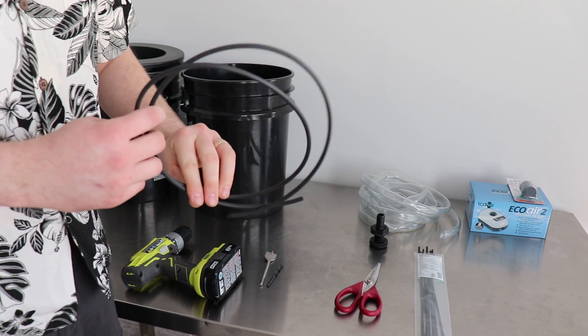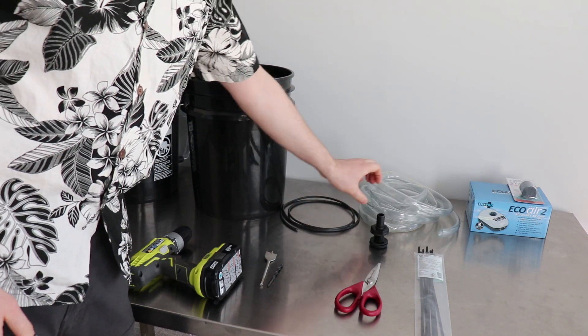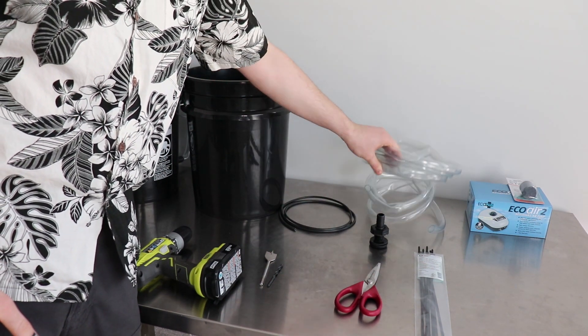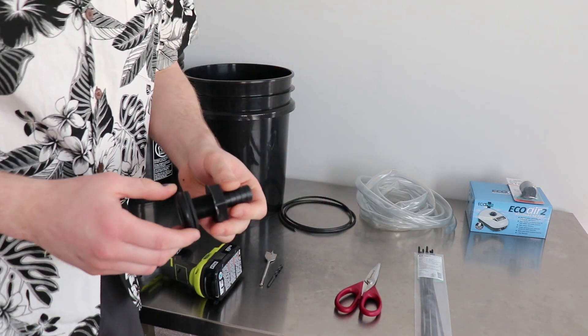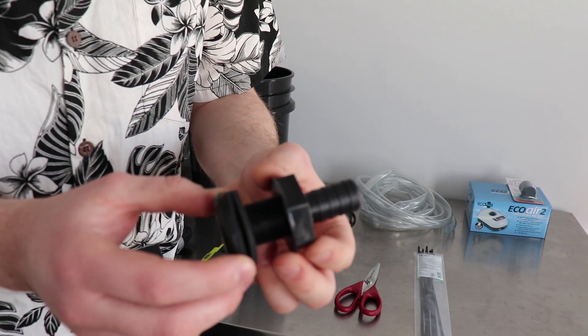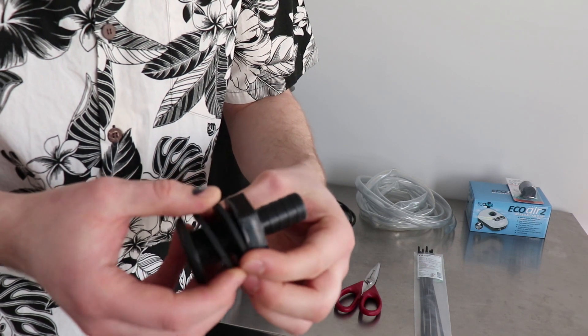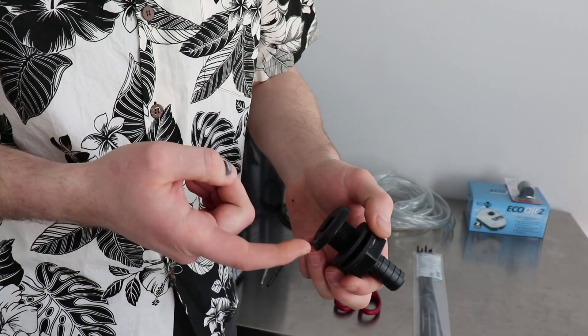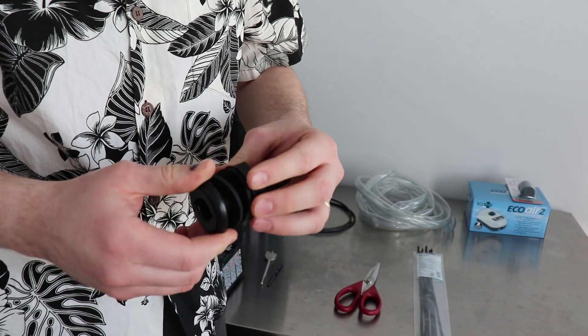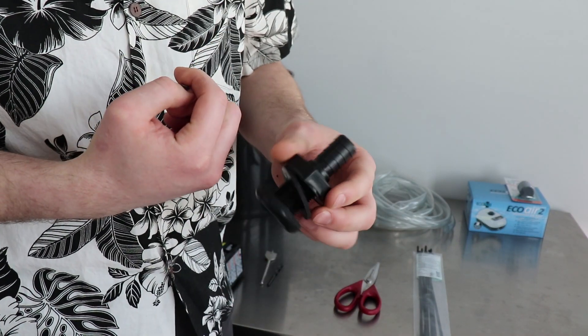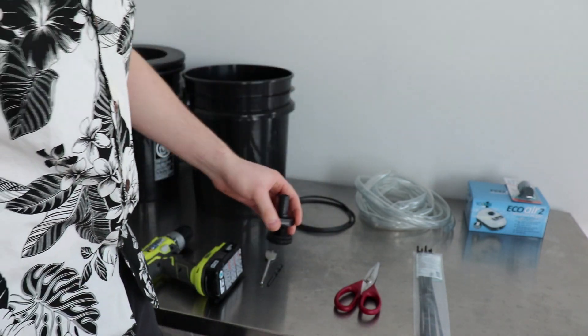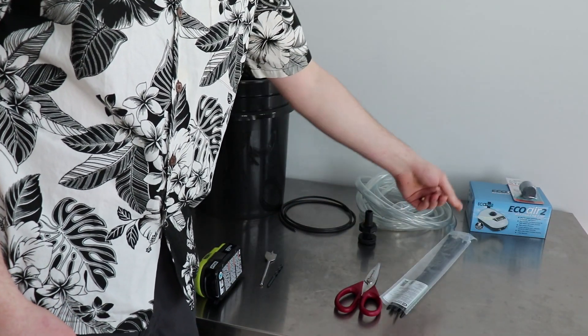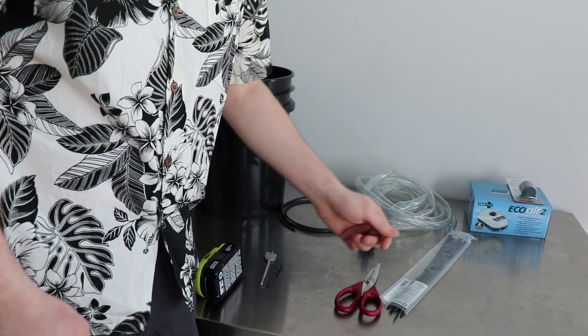Some quarter inch air line, 5 eighths diameter clear tubing. This is a 5 eighths barbed fitting, it sandwiches the bucket in between. You can get a grommet with a 90 on it, it might be a little cleaner, but this is what I have around, so this is what I'm using. Some zip ties, air pump, and some air stones.